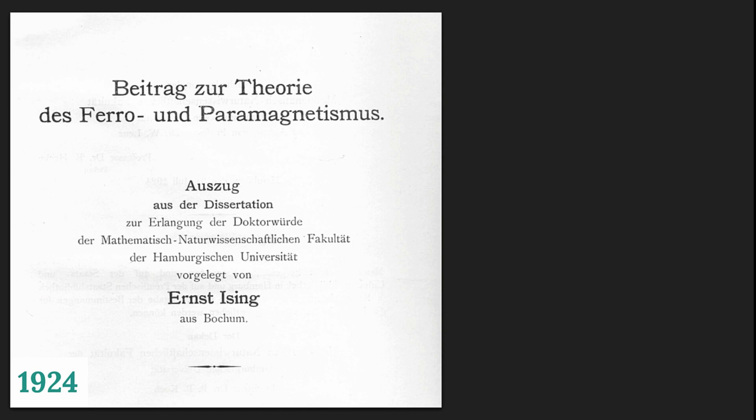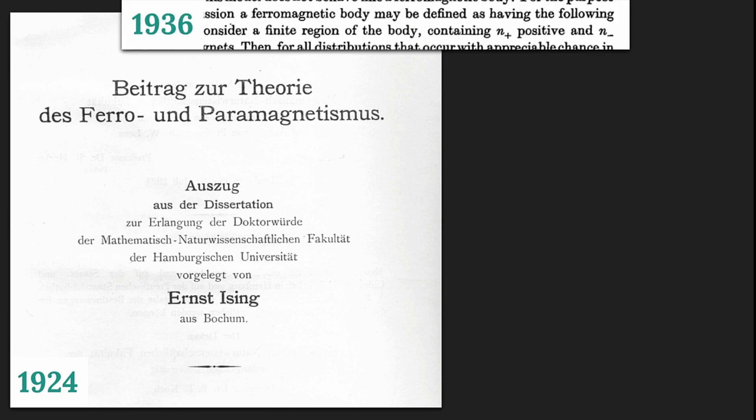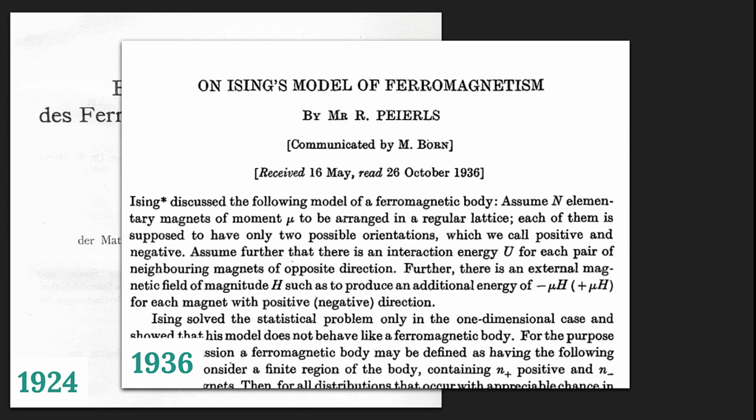It was back in 1924 that the one-dimensional linear model was given to Ernst Ising, or properly pronounced Ising, as his thesis problem by Lenz. And in 1936, Rudolf Peirels showed that there must be a phase transition in two or more dimensions.